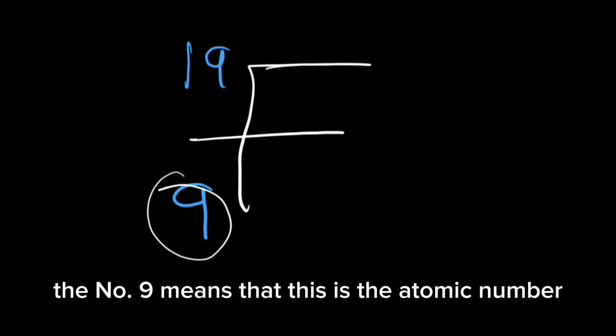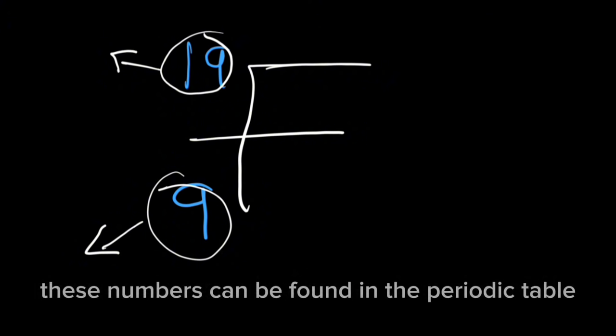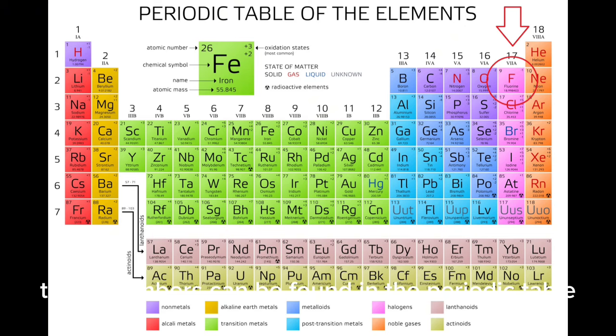The number 9 means this is the atomic number. The number 19 means this is the mass number. These numbers can be found in the periodic table.